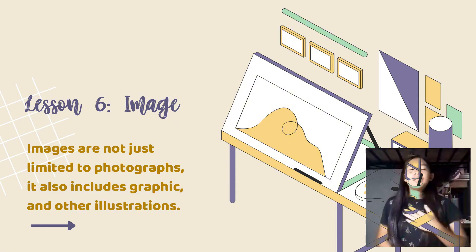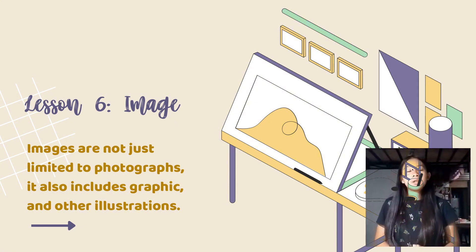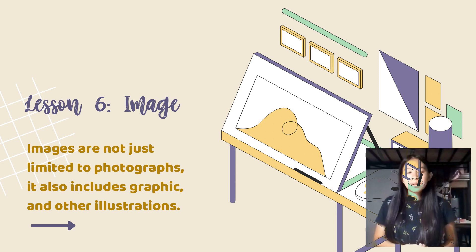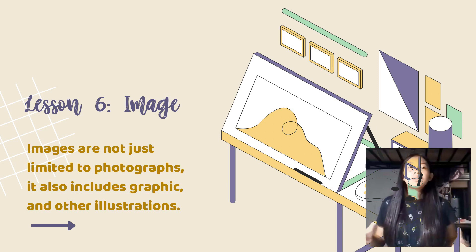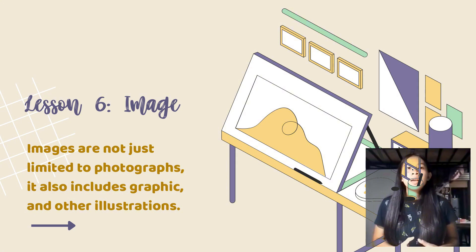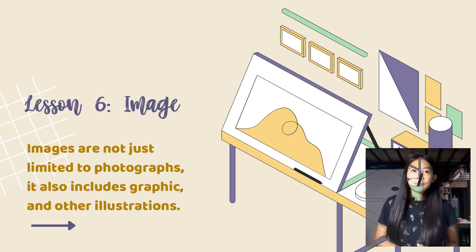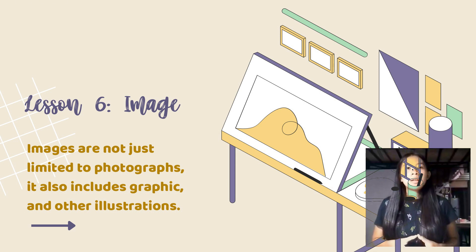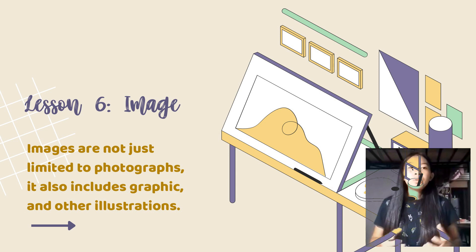Hello everyone, my name is Maria from BSHF 1A. Today I'm going to report about Imaging and Designing for Social Impacts, Lesson 6: Image. Images are not just limited to photographs — they also include graphics and other illustrations. Having images in your composition makes it appealing to the eye of the viewer. Finding and placing the right images is not difficult as long as you know what kind of image you are going to use.